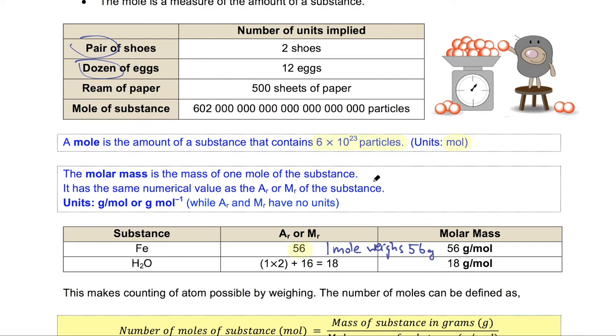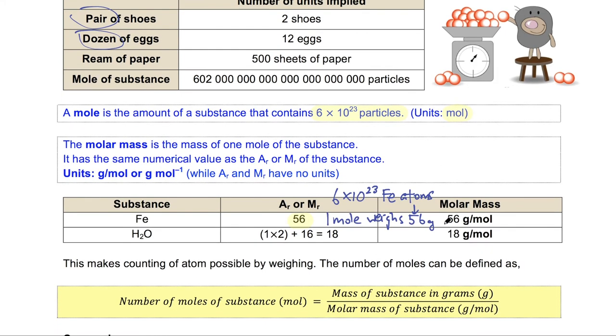In other words, 6 times 10 to the power of 23 iron atoms would weigh 56 grams. So how is this different from the relative atomic mass? The difference is that the molar mass has units whereas the relative atomic mass does not have a unit.